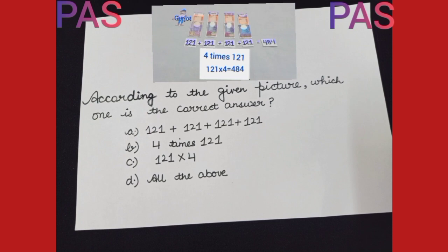And we can write 4 times 121 as 121 multiplied by 4. So option C is also correct. So our right answer or the correct answer is option D, all the above.